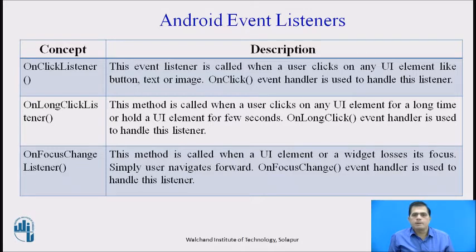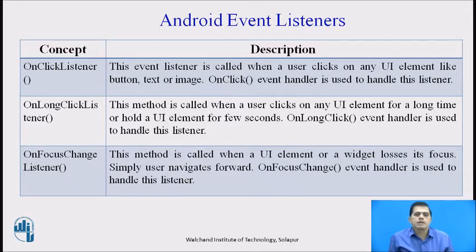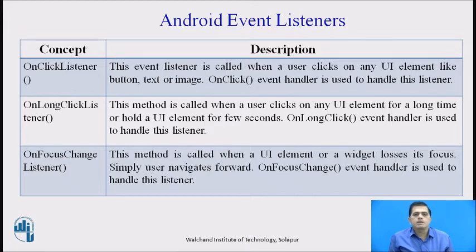Now we will see the types of event handlers, because a developer has to use different event handlers as per requirements. First is OnClickListener — this event listener is called when a user clicks on any user interface element like a button, text, or image. The OnClick Event Handler is used to handle this event. For example, if the user has to write code for a button, they use the OnClickListener interface. Then OnLongClickListener — this method is called when a user clicks or holds a UI element for a few seconds.